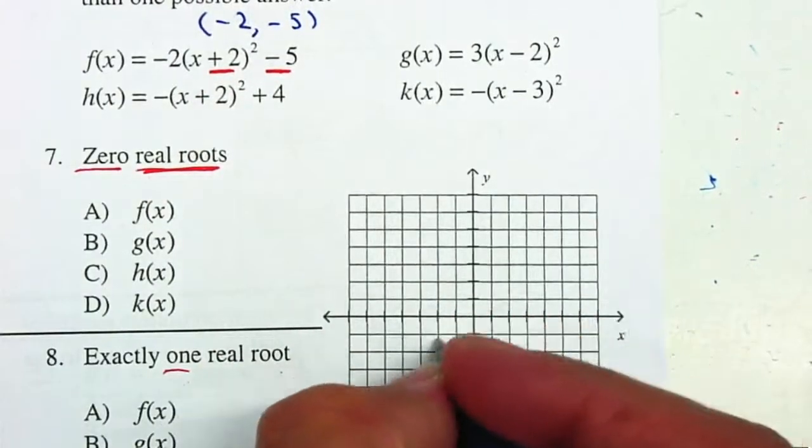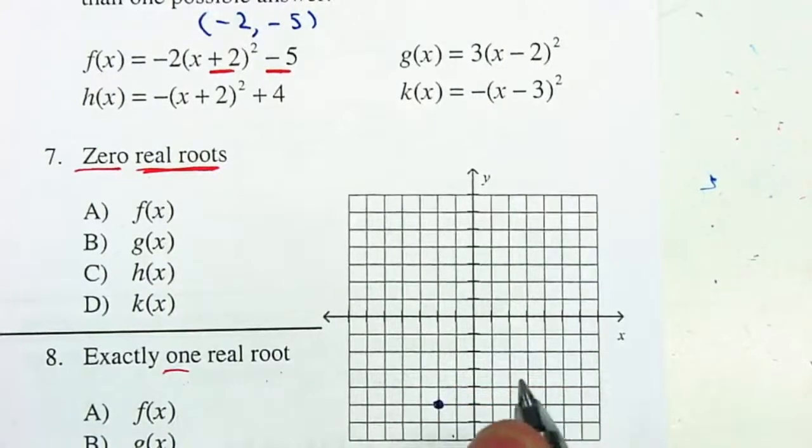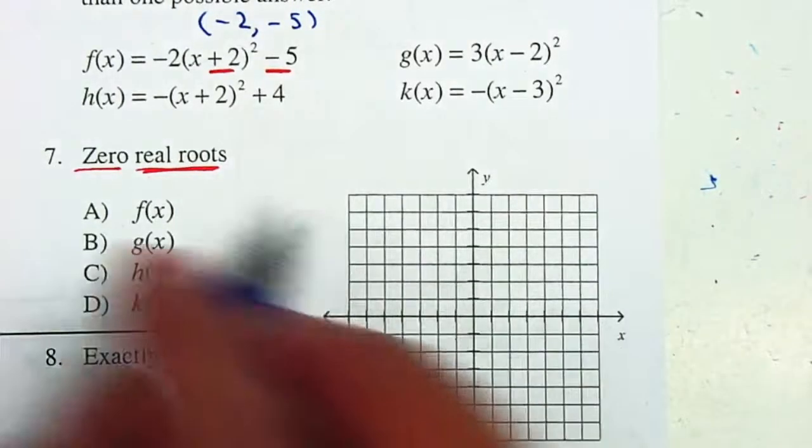So negative 2 and 2, 4, 5. And I need to decide, is it facing up or down? Remember, we are dealing with a parabola. Your a-value will tell us if it's facing up or down.